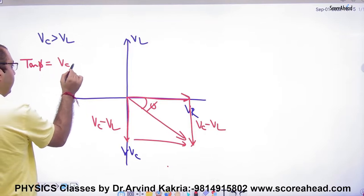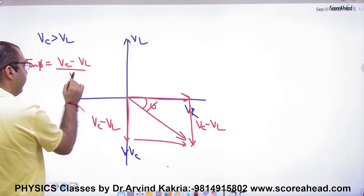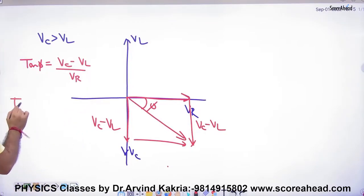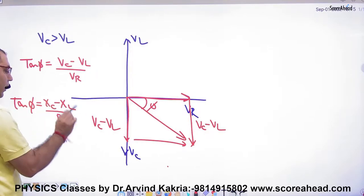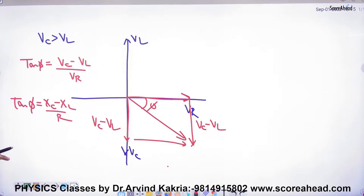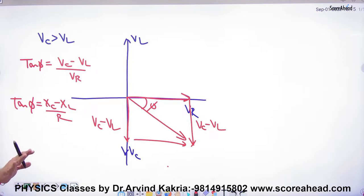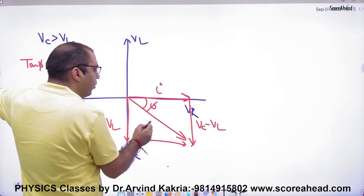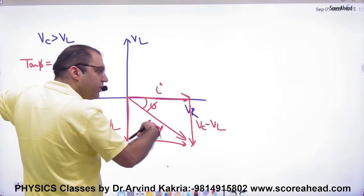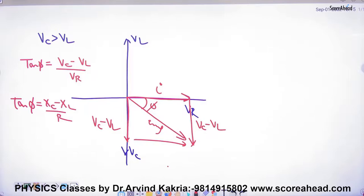The value of φ: tan φ = (VC − VL) / VR, or in terms of resistance, tan φ = (XC − XL) / R. Whether VL or VC is greater determines the sign. The difference is that the phasor diagram shifts below the axis, meaning EMF lags behind current by an angle φ.